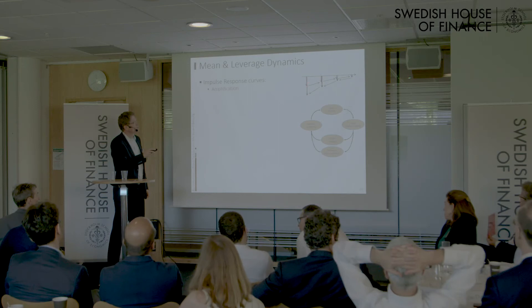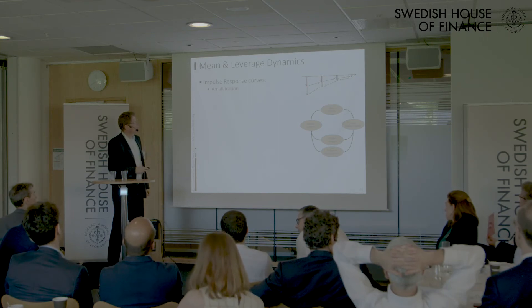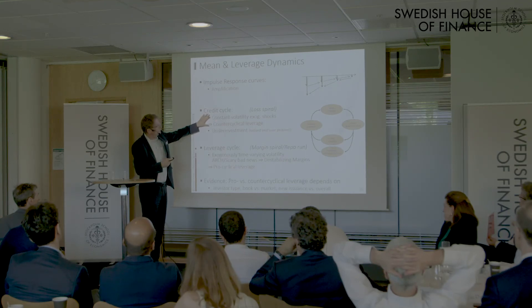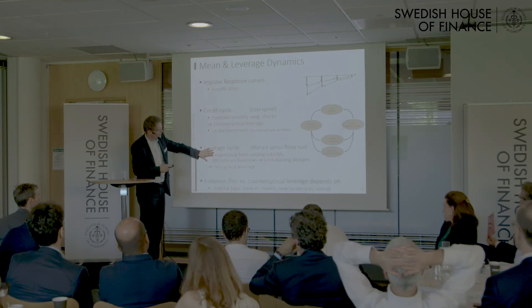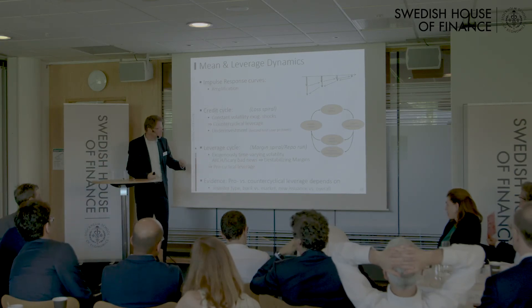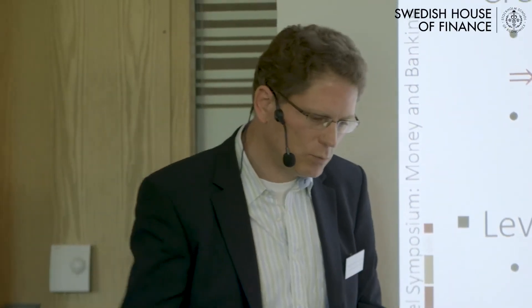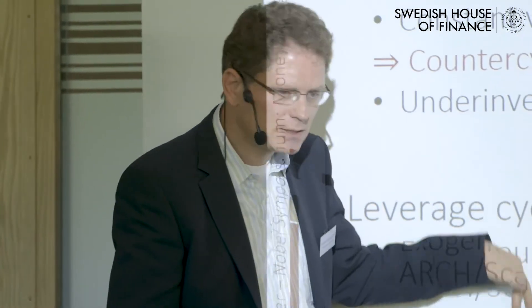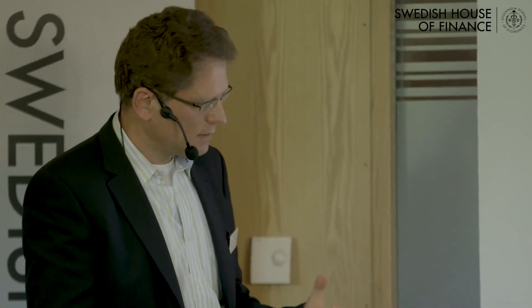Most of the literature focuses on impulse response functions with amplification: a temporary shock is persistent, feeds back, and becomes even bigger. In the credit cycle literature, Lasse and I call this a loss spiral — you get counter-cyclical leverage from it. If you also have the leverage cycle — what we call a margin spiral, because margins shoot up (Gary Gorton called it a repo run, but it's essentially the same thing) — you can get this if there's scary bad news: exogenous time-variation in volatility causes higher destabilizing margins, and then pro-cyclical leverage.